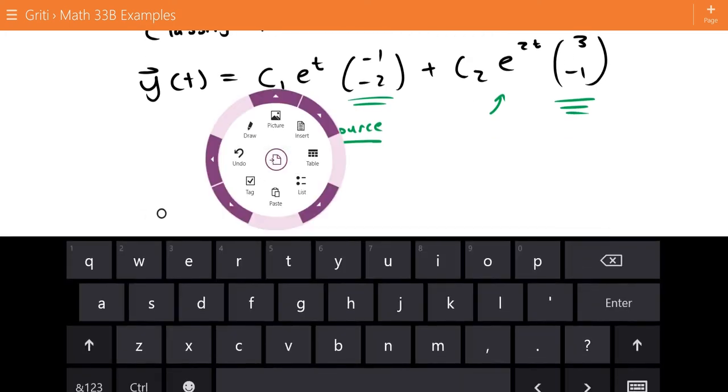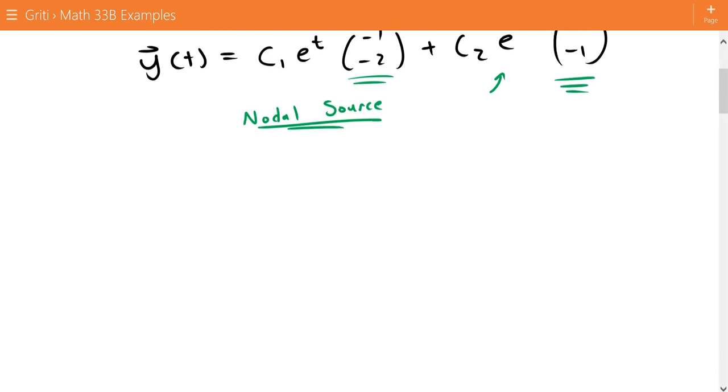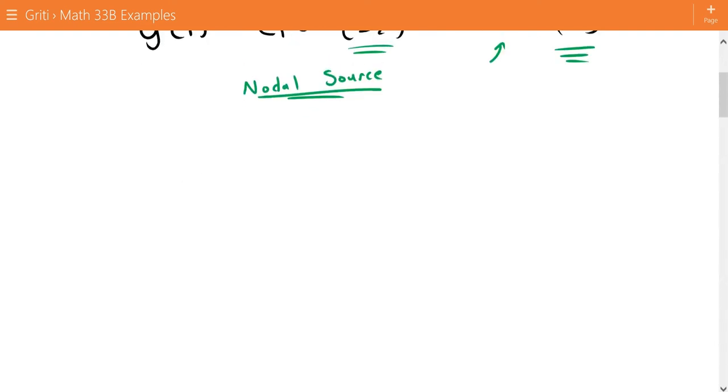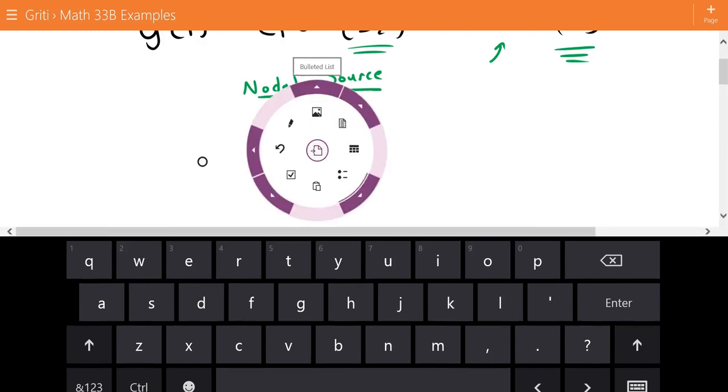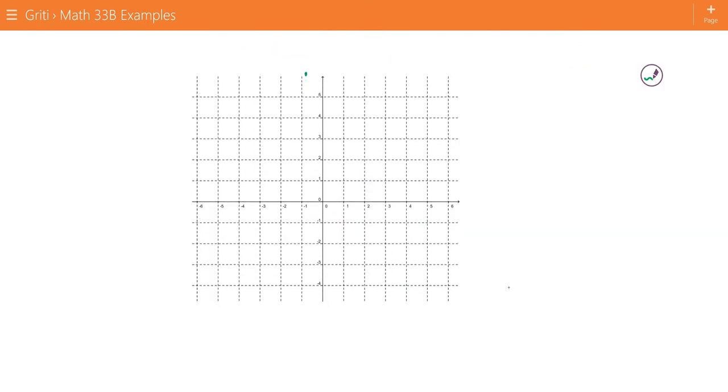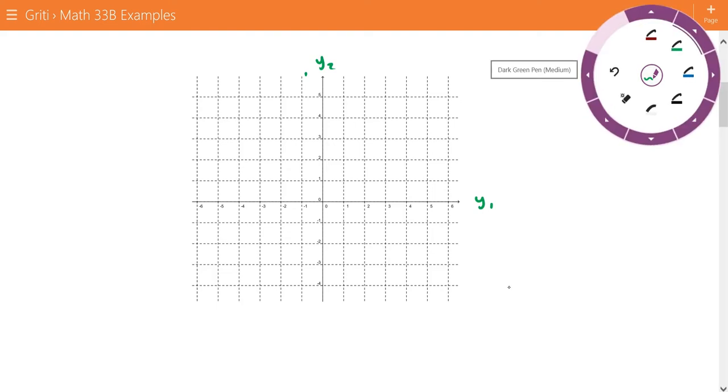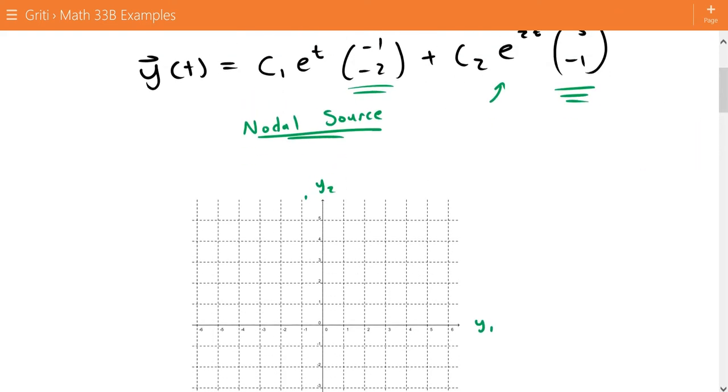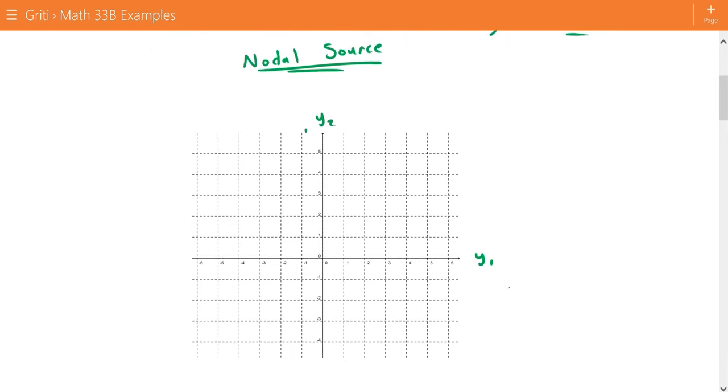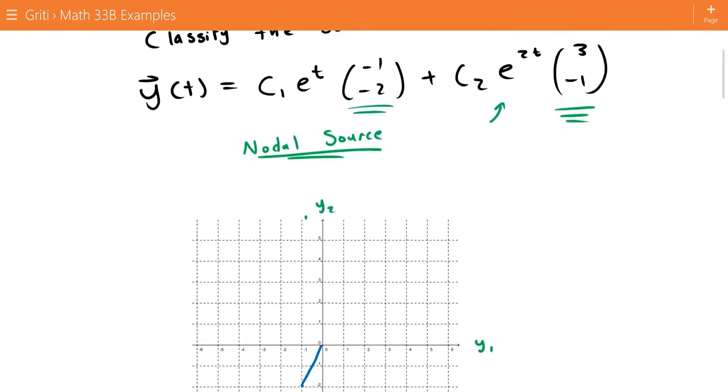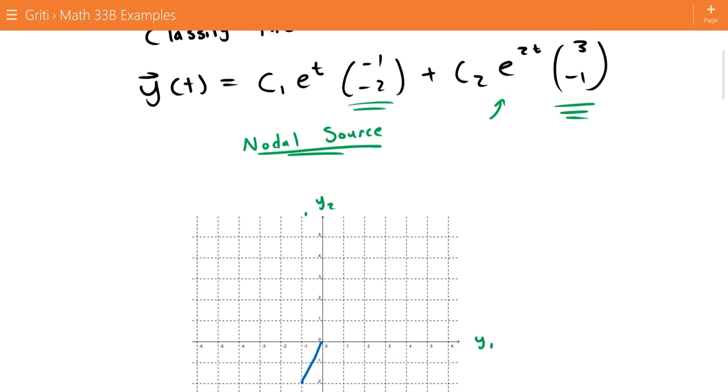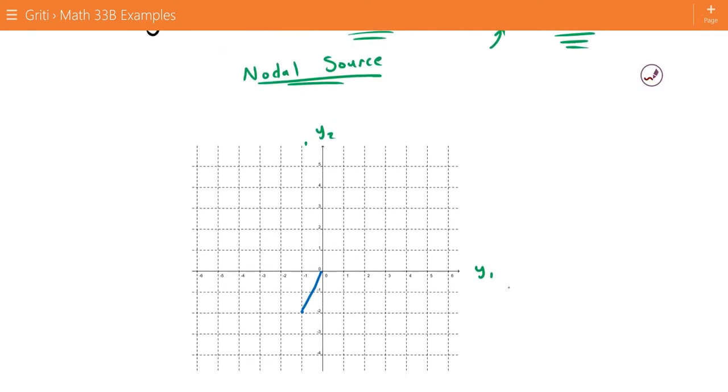So if we first graph these vectors, we can draw and label axes y1 and y2. We draw v1, which is negative 1, so that's going to be out here. And then we can draw v2, which is 3 negative 1, so that's right here.